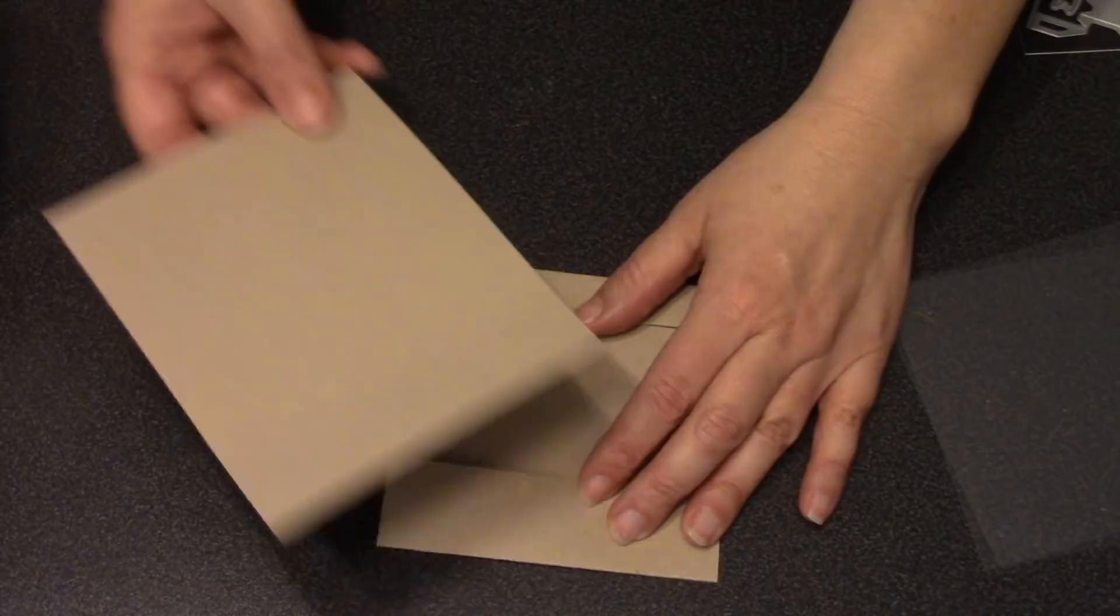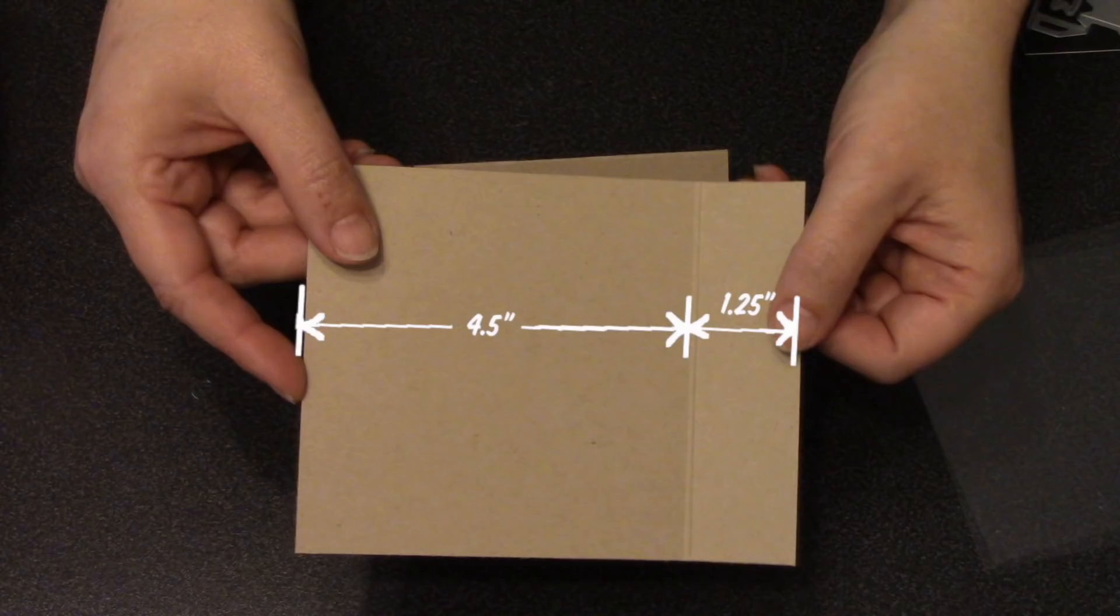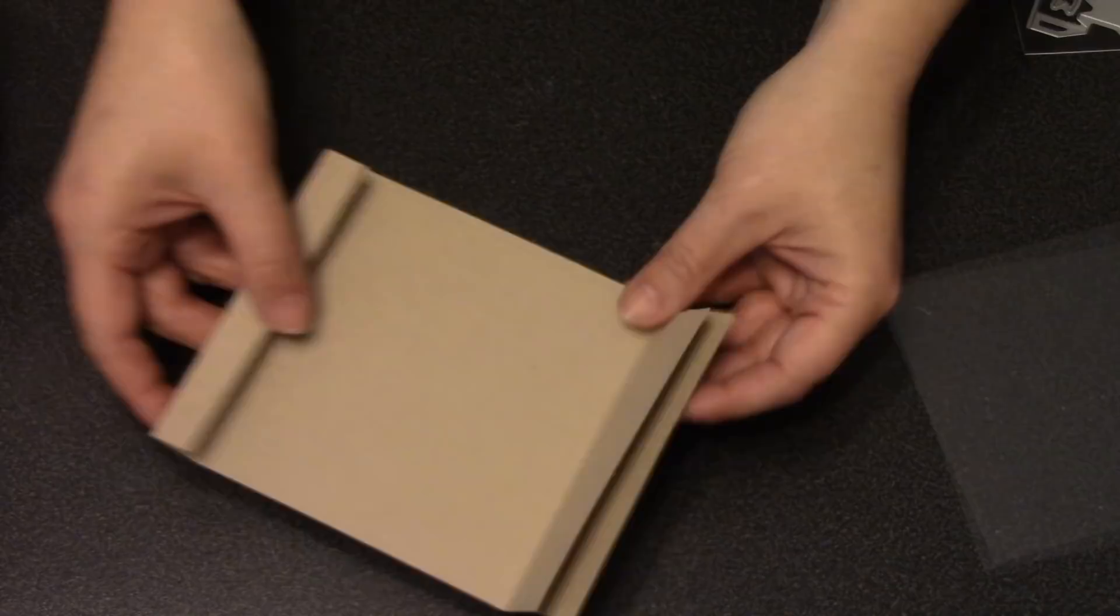I also need a backing card—that's the same craft cardstock, 4.5 inches by 5.75 inches. I'll score it at 1.25 inches from the right side, so later on that becomes the backing card that goes behind the main pop-up card.